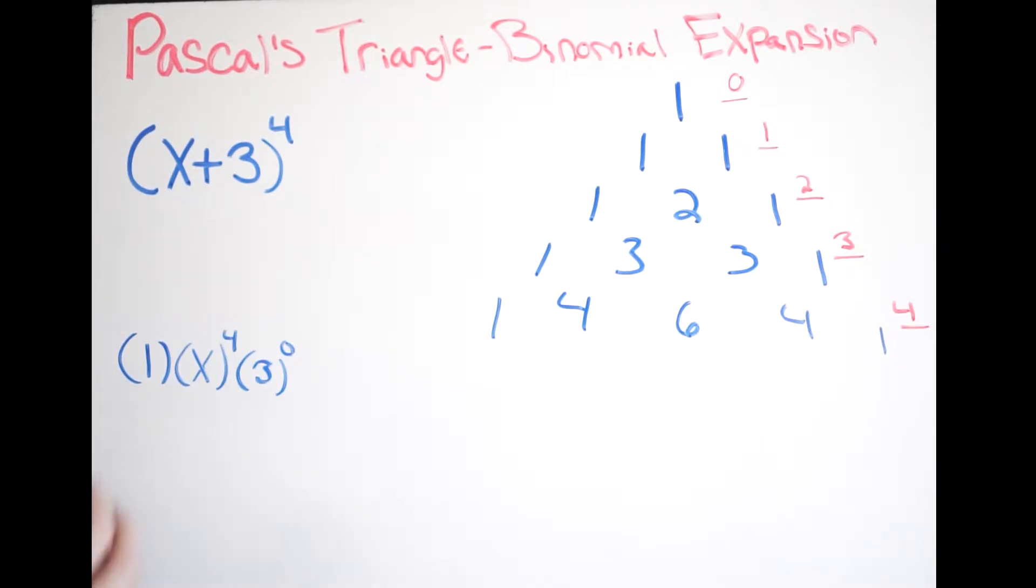That's how you're going to start it off. And now I'm just going to add. So plus, I use my next coefficient, which is four, times, now my first term. Watch what happens here, right? We minus one on our exponent. So it's not four anymore. It's three.